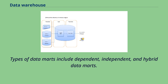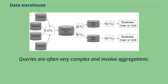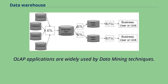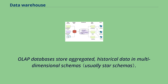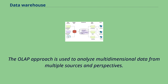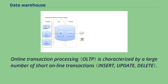Types of data marts include dependent, independent, and hybrid data marts. Online analytical processing (OLAP) is characterized by a relatively low volume of transactions; queries are often very complex and involve aggregations. For OLAP systems, response time is an effective measure. OLAP databases store aggregated historical data in multidimensional schemas. OLAP systems typically have a data latency of a few hours. The three basic operations in OLAP are roll-up, drill-down, and slicing and dicing.